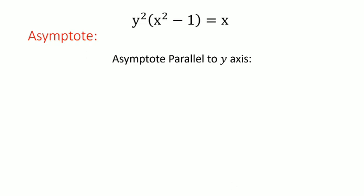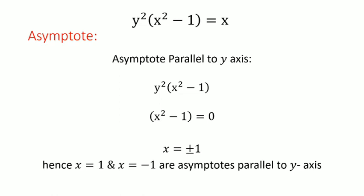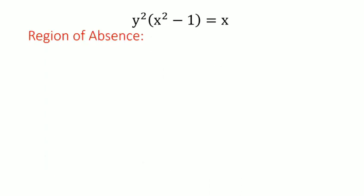Next, we find asymptotes parallel to the y-axis. To find these, we get the highest degree term in y, which is y²(x² - 1). We equate the coefficient of the highest degree term in y with 0, that is x² - 1 = 0. This gives x = ±1. Hence x = 1 and x = -1 are the asymptotes parallel to the y-axis.